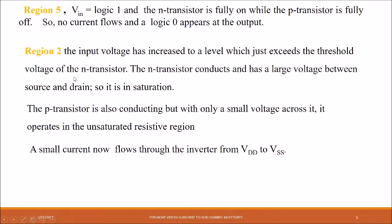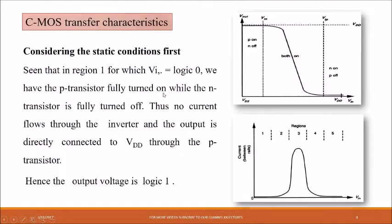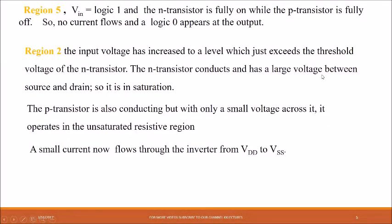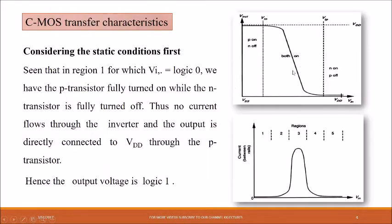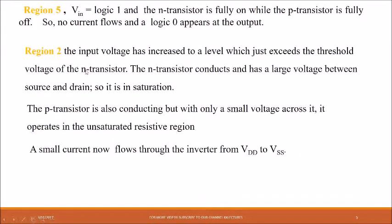In Region 2, the input voltage has increased to a level which just exceeds the threshold voltage of the N transistor (Vtn). The N transistor conducts with a large voltage between source and drain, so it is in saturation. The P transistor is also conducting but with only a small voltage across it, operating in the unsaturated or resistive region. A small current now flows through the inverter from VDD to VSS. So NMOS is in saturation and PMOS is in the resistive region.